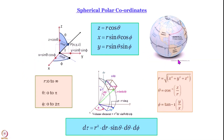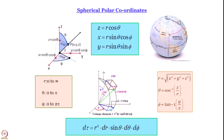Just to recapitulate, we are discussing a rotating diatomic molecule. We have reduced the two-body problem to a one-body problem by using reduced mass mu, and since we are talking about a rigid rotor we use spherical polar coordinates. In spherical polar coordinates r, theta, phi, we have discussed the relationship between Cartesian coordinates and spherical polar coordinates, and we take r as a constant r₀ because we are talking about a rigid rotor.